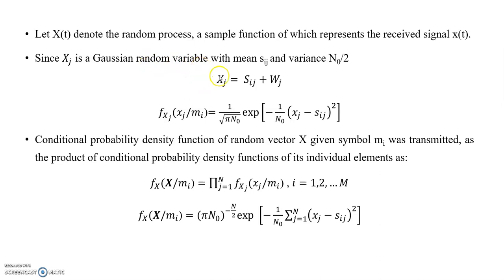Since x_j is a Gaussian random variable, its probability density function can be represented by the general expression: (1 / √(2πσ²)) · e^(−(x−μ)² / (2σ²)), which is completely defined by its mean and variance. Substituting mean equal to s_j and variance equal to N₀/2, we get: (1 / √(2π · N₀/2)) · e^(−(x_j − s_ij)² / (2 · N₀/2)). This gives the equation for the conditional probability density function of x_j given m_i.